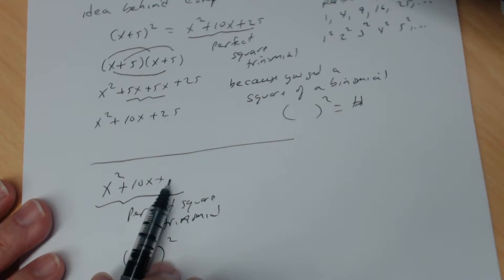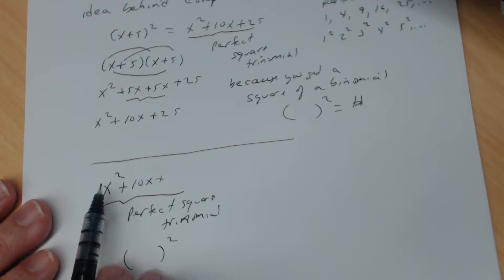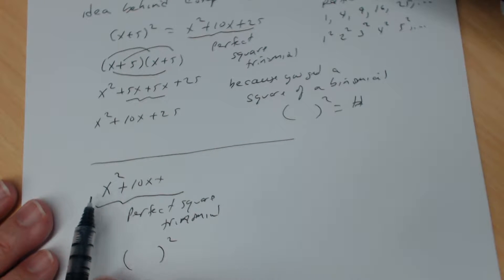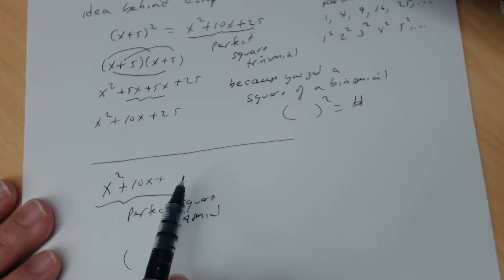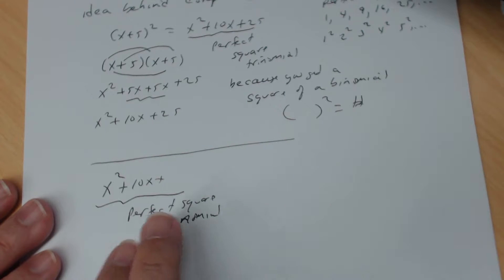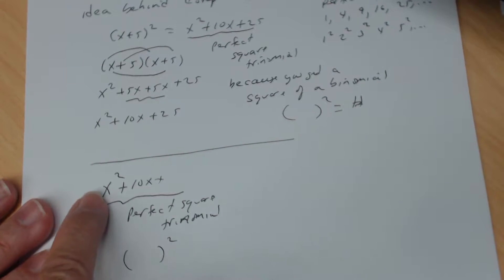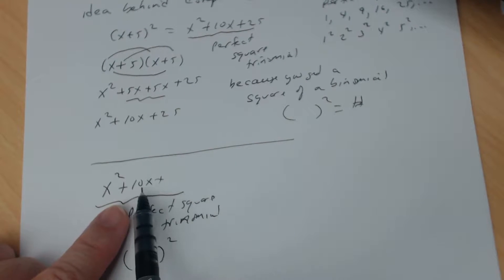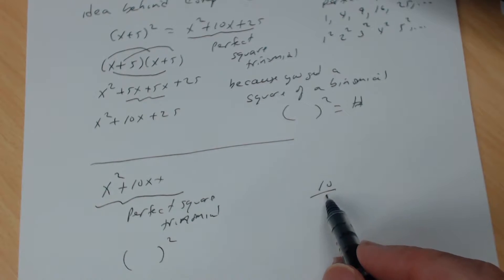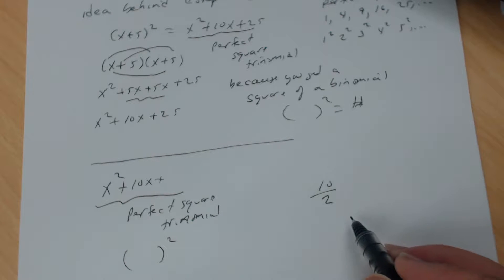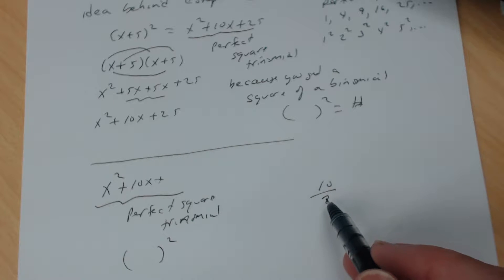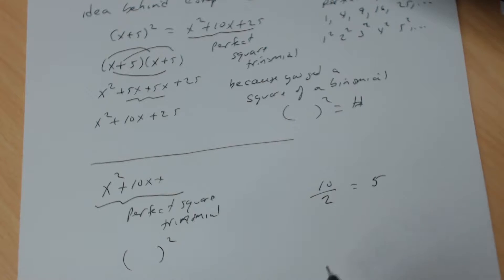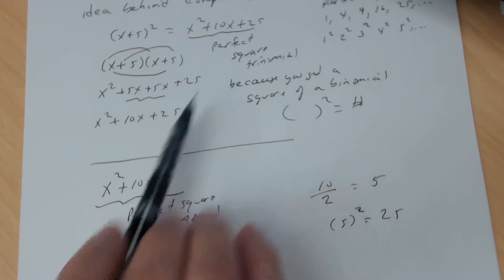Let's think about this. For x² + 10x, you want to add 25. First, the coefficient of x² must be 1 — if it's anything other than 1, you divide every term by that number. Since it's 1 here, the next step is to take the coefficient of x, which is 10, and always divide by 2. Since 10 divided by 2 is 5, you then square that result: 5 squared is 25. That's what you add.